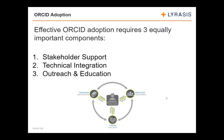Because ORCID is structured like an ecosystem, it's really important that all stakeholders need to be active in order for everyone to get the most benefit. For most institutions — including universities, research institutes, publishers, funders, and societies — there are three equally important components needed to help both the institution and individual researchers benefit from ORCID: gaining internal stakeholder support to prioritize ORCID adoption, integrating the ORCID API with local systems, and doing outreach to educate researchers about ORCID so that they will get and use their ORCID IDs. This is especially important because researchers are so central to the ORCID system.